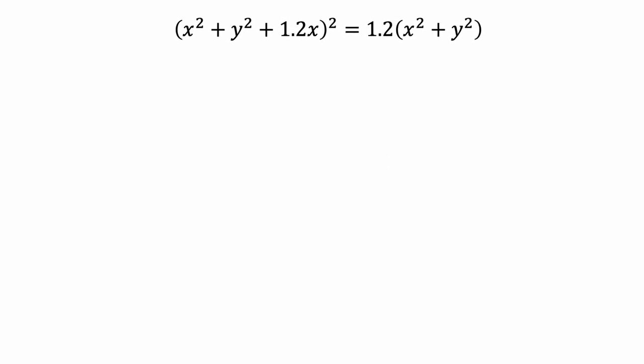The main challenge here is to compute the derivative. Let's start by working with the left-hand side of the equation. This is a composition of two functions. The outer function is x-squared, and the argument for the inner function is x-squared plus y-squared plus 1.2x. So we can use the chain rule, which tells us to take the derivative of the outer function, plug in the argument, and multiply by the derivative of the argument.